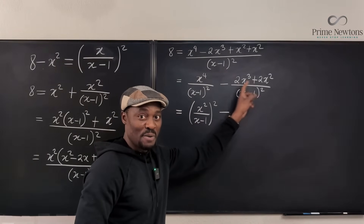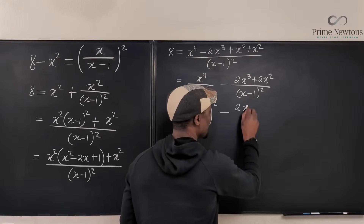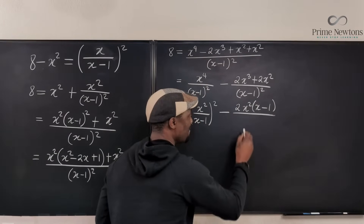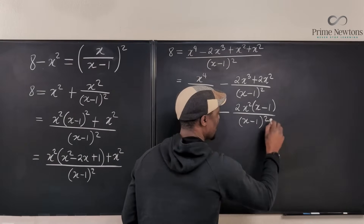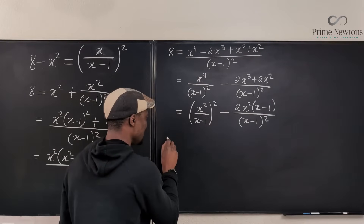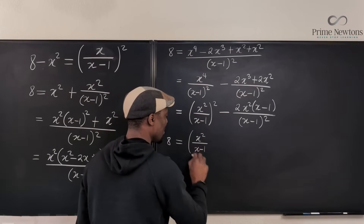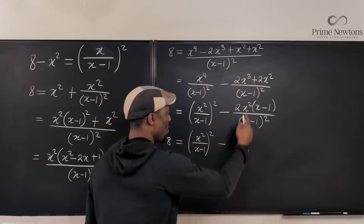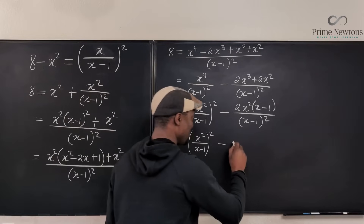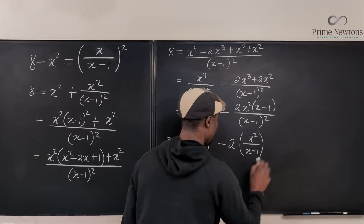The right part can be factored. What is common to both terms? 2x squared. I can take out 2x squared: 2x squared times (x minus 1), divided by (x minus 1) squared. That x minus 1 cancels one of the (x minus 1) factors. So we end up with: 8 equals x squared over (x minus 1) squared, minus 2 times x squared over (x minus 1). That equals 8.